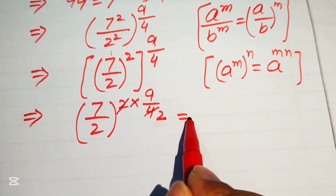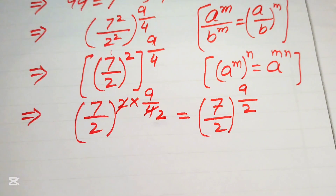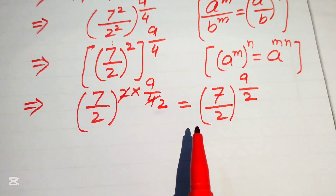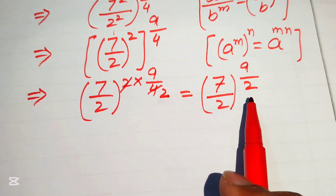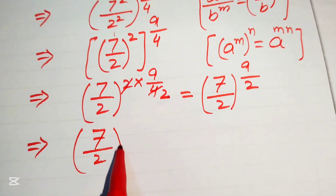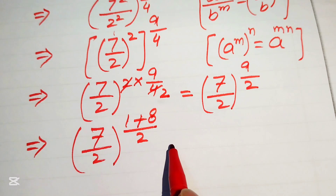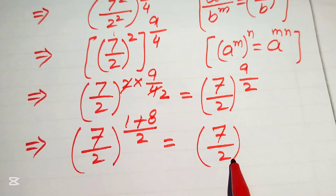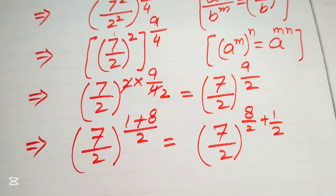The 2 and 4 simplify, and we write it as 7 over 2 with exponent 9 divided by 2. We need more simplification, so we focus on the exponent 9 over 2. We write 9 as 1 plus 8 divided by 2, then break this fraction to get 7 over 2 with exponent 8 over 2 plus 1 over 2.